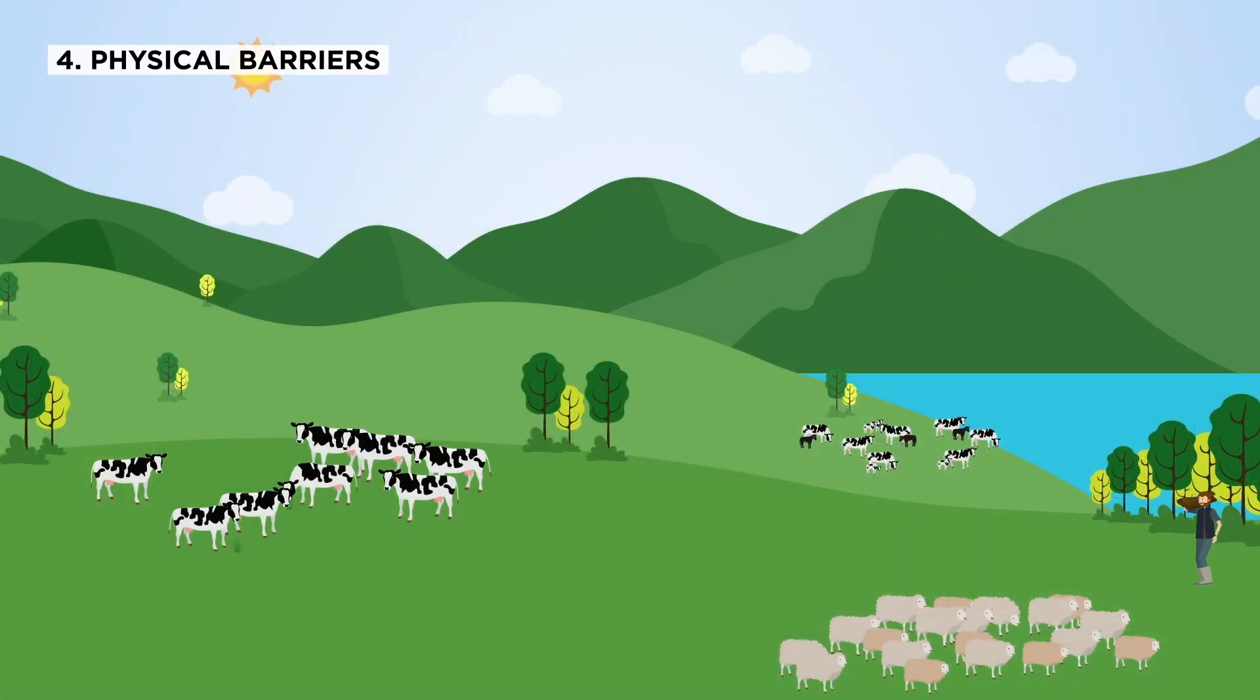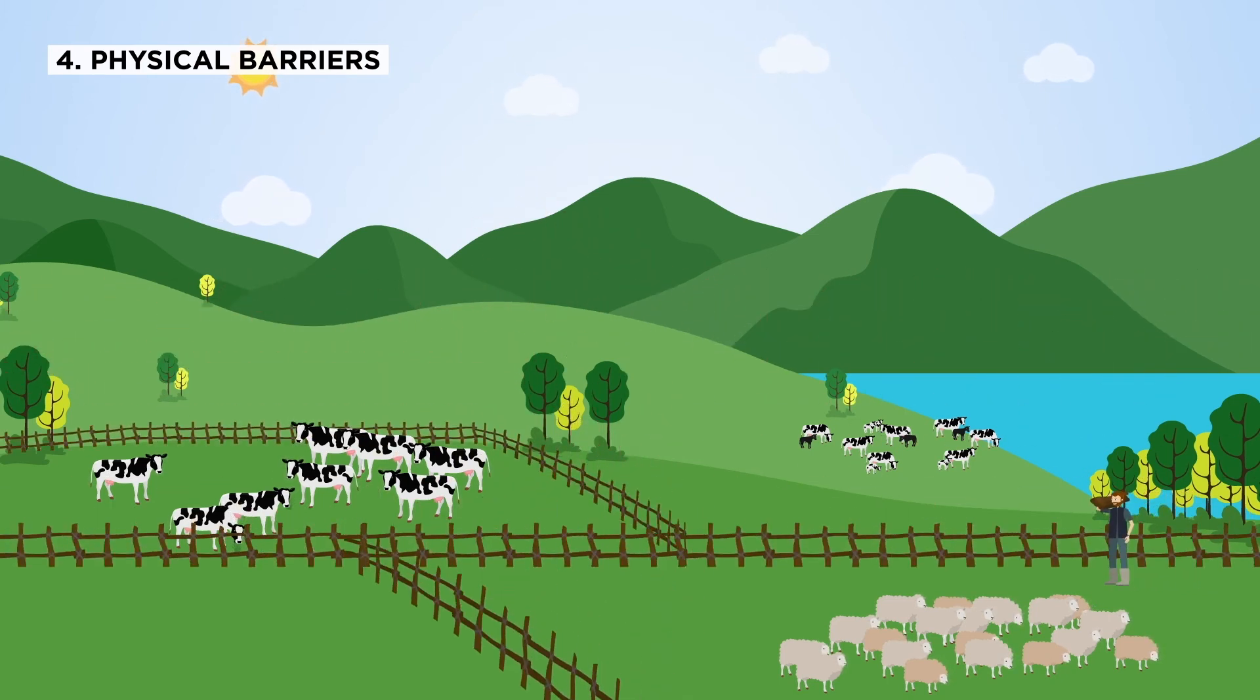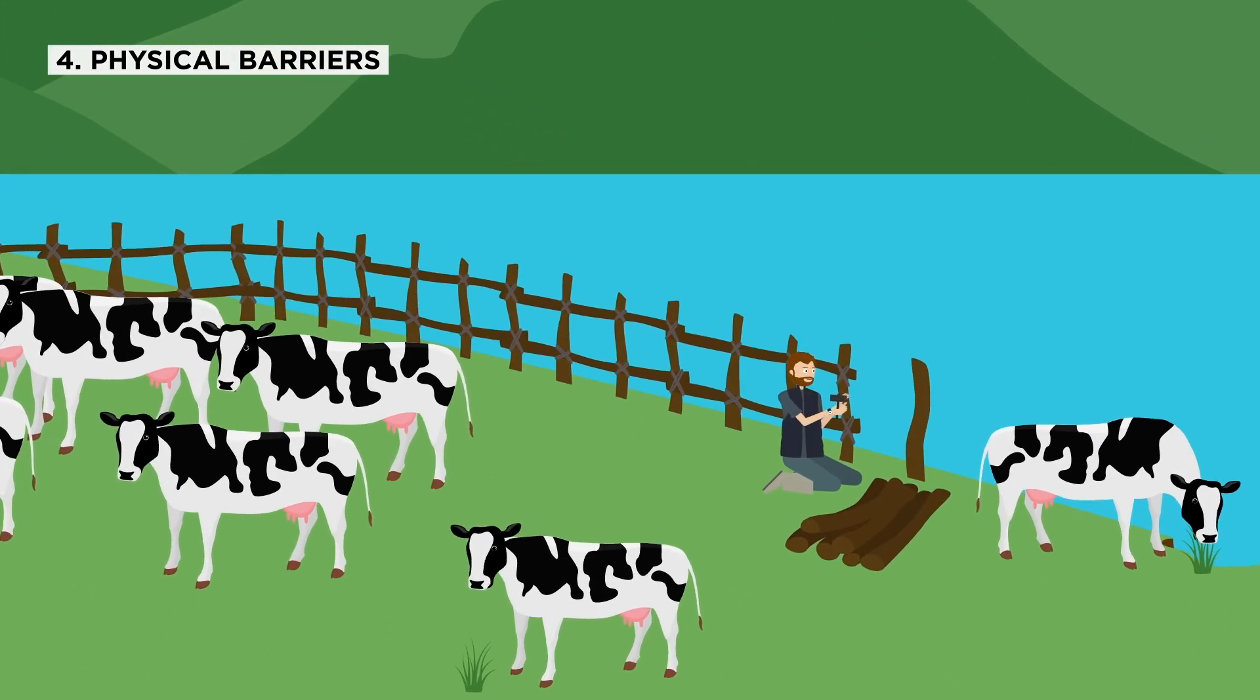Fencing and buffer strips are also an effective way to keep nutrients in fields after optimum application. Through installing fences along riverbanks, farmers can help to reduce bank and soil erosion by preventing cattle from accessing the river.